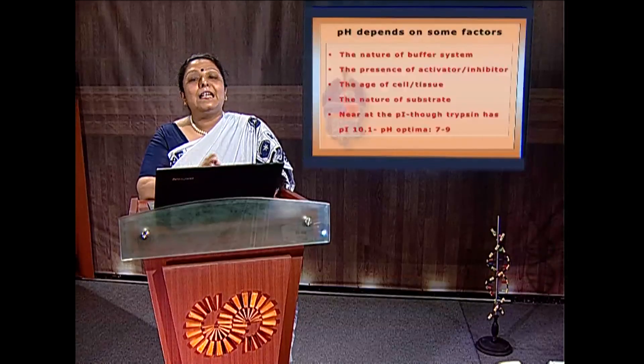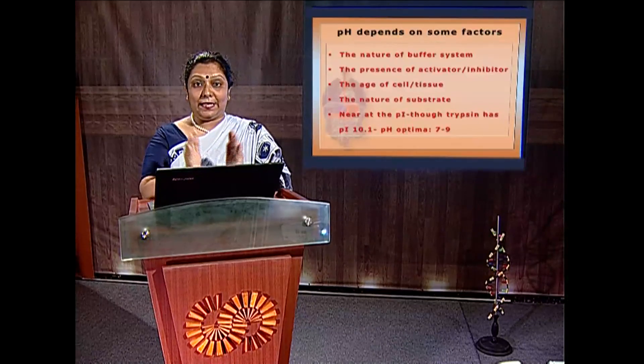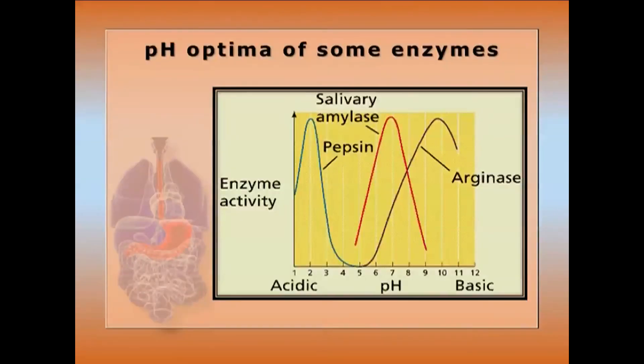Below pH 2.5, the active site COO⁻ of trypsin becomes COOH and activity is lost; beyond pH 11, the ε-NH₃⁺ of lysine becomes NH₂ and the enzyme is inactivated. pH optima of specific enzymes: pepsin is highly acidic at 1.5; invertase is acidic at 4.8; fumarase at 7.5–7.8; arginase is highly alkaline at 10.